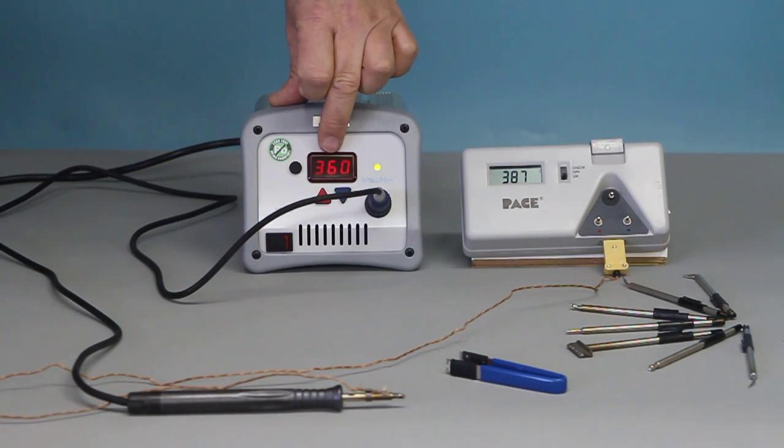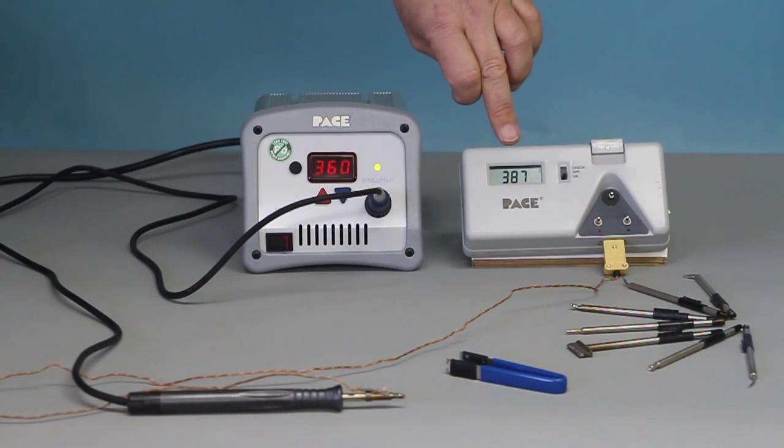As you can see this station has been set at 360 degrees but the tip temperature, which we adjusted especially, is 387 degrees. It's out of calibration.